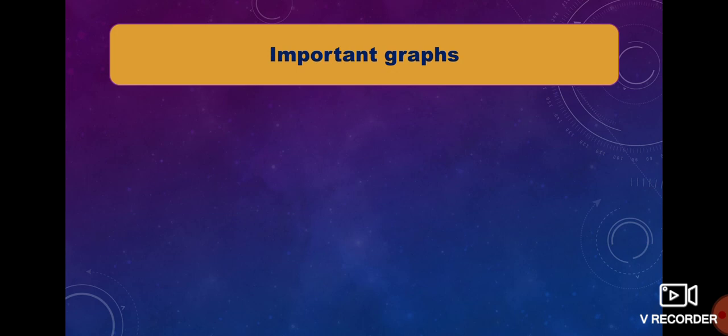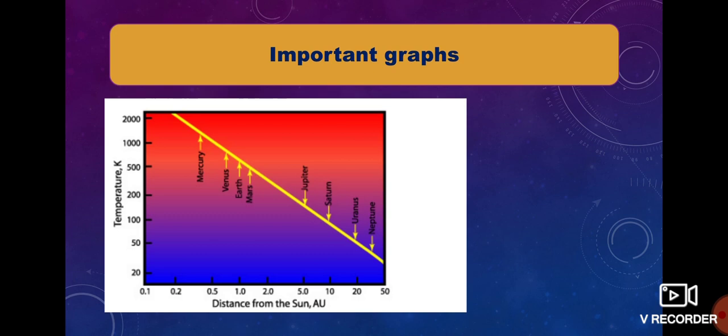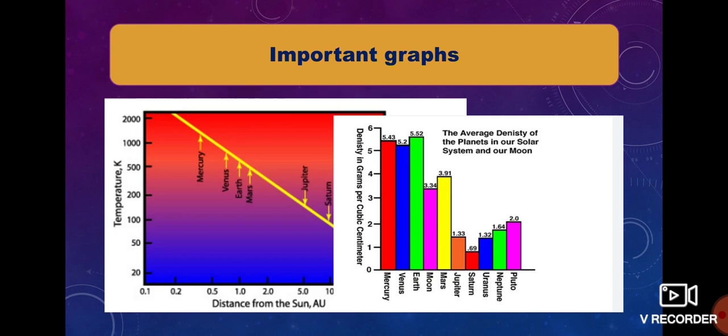Here are two important graphs. In the first graph we see that temperature decreases with increasing distance from the Sun. In the second graph we can see the density of planets — according to this graph, the density of Earth is very large, while the density of Saturn is very small.